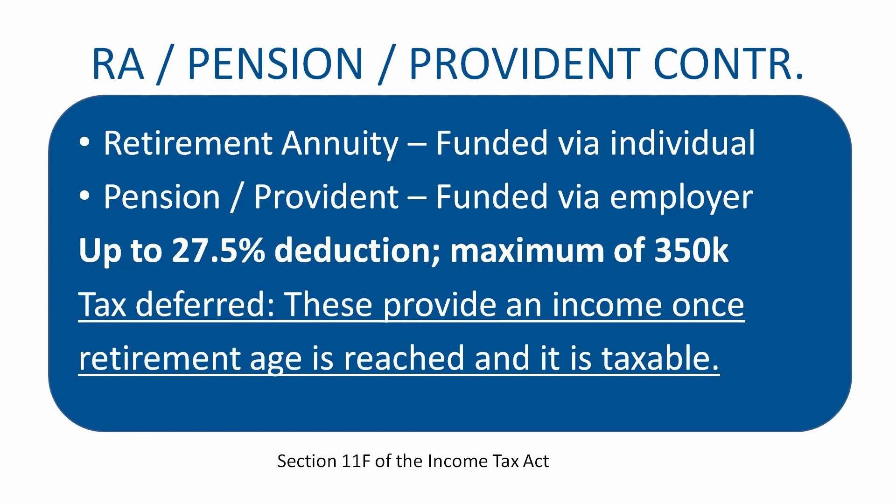That 27.5% deduction is quite significant and can almost guarantee you a refund from SARS. Just remember this is a tax-deferred product, meaning you get the deduction now, but when you retire — at age 55, 60, or 65 — and decide to take the money, the annuity or pension creates a monthly income that is then taxed. The money you set aside throughout your life eventually provides an annuity income that is taxed. For more information you can check section 11F of the Income Tax Act.